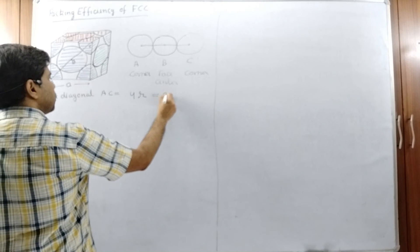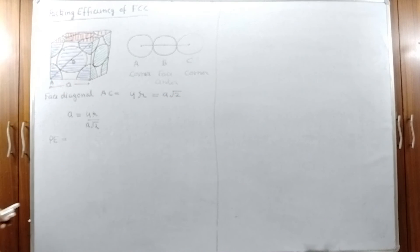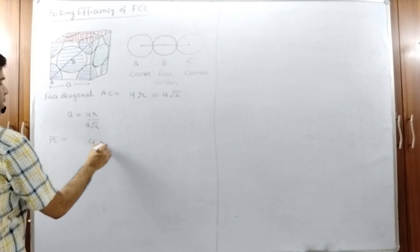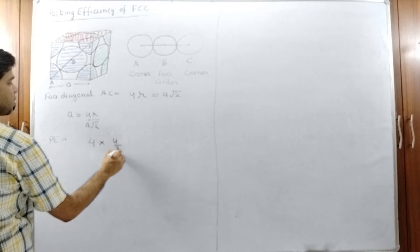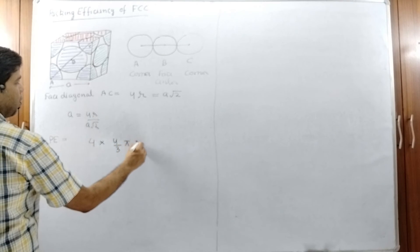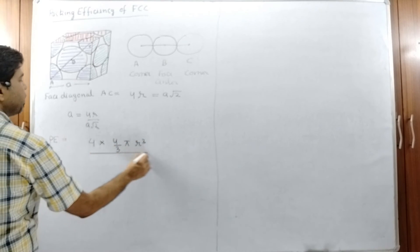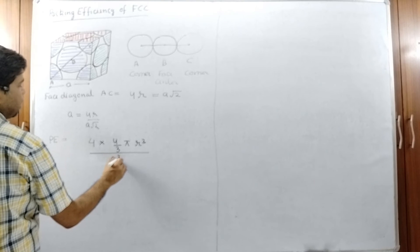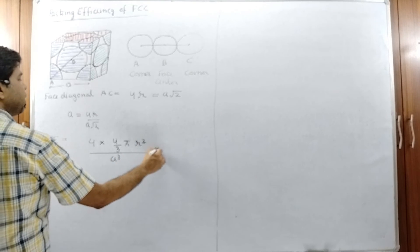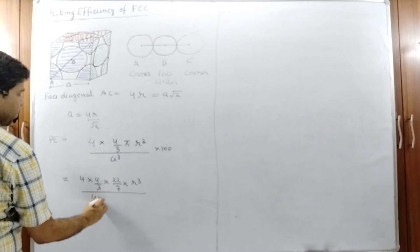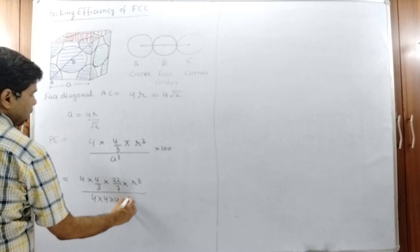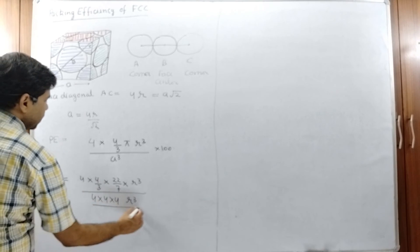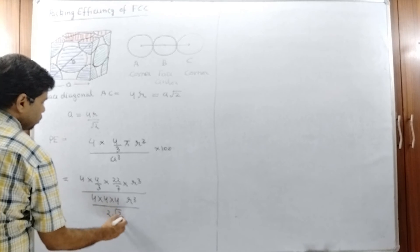4R equals A√2. Packing efficiency is the number of particles multiplied by the volume of one particle — which is (4/3)πR³ — divided by the volume of the unit cell A³, multiplied by 100. This simplifies to 4 × (4/3)πR³ divided by (A√2)³.